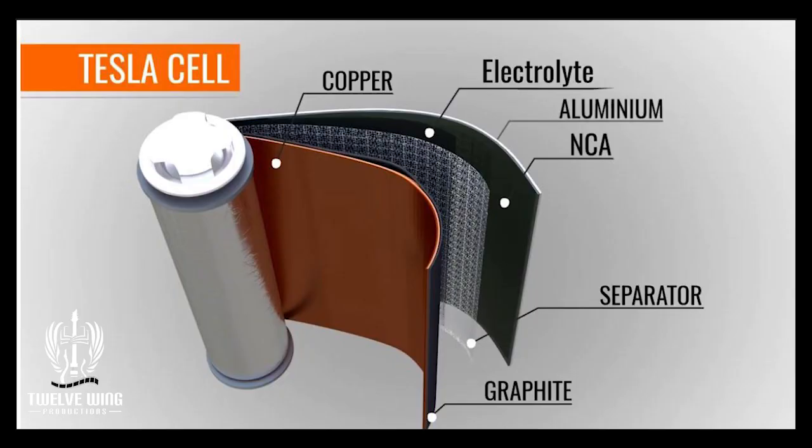I have a graphic here that shows what a battery cell looks like in general. I'll walk you through all the components in a Tesla cell, and then we can talk a little bit about what cobalt does specifically.